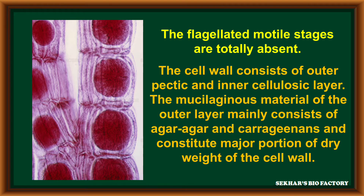In the cell structure, the cell wall consists of two layers: the outer layer is made up of pectin, and the inner layer is made up of cellulose. Especially around the cell wall, a mucilaginous material of the outer layer consists of agar and carrageenan, and acts as a major portion of the dry weight of the cell wall.